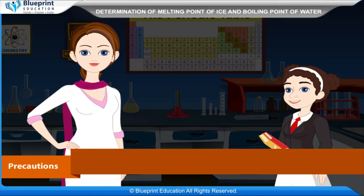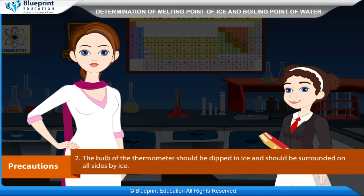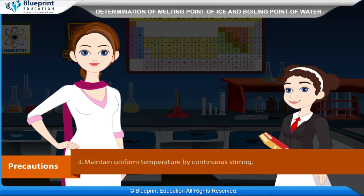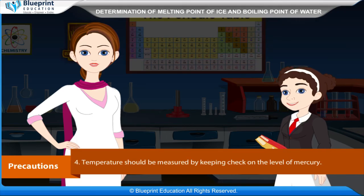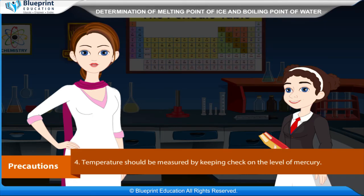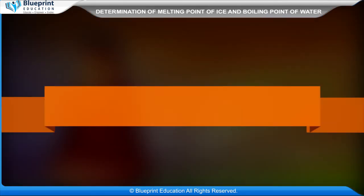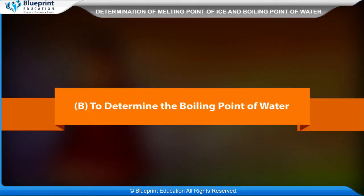Precautions: Ice should not contain water before using it for melting point measurement. The bulb of the thermometer should be dipped in ice and surrounded on all sides by ice. Maintain uniform temperature by continuous stirring. Temperature should be measured by keeping the eyes in line with the level of mercury.